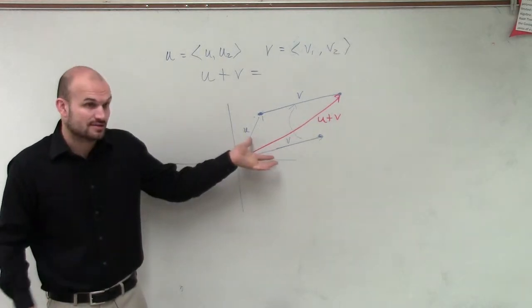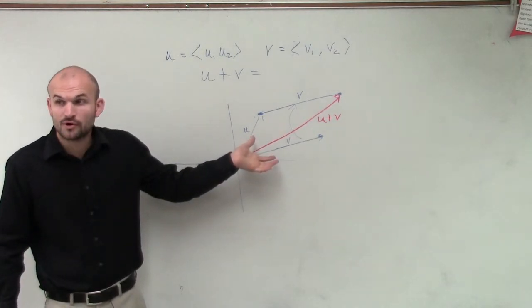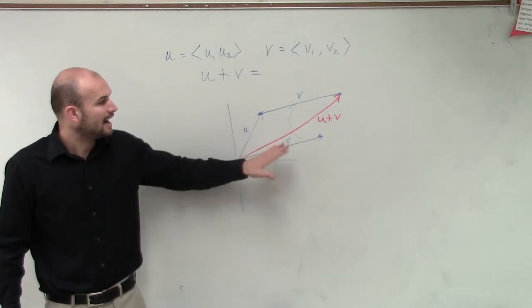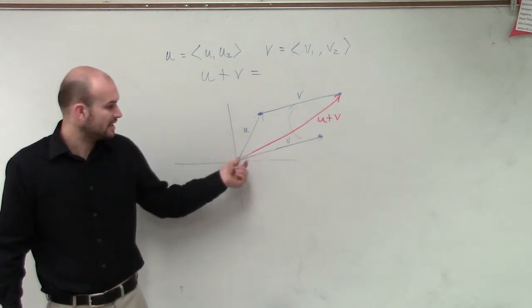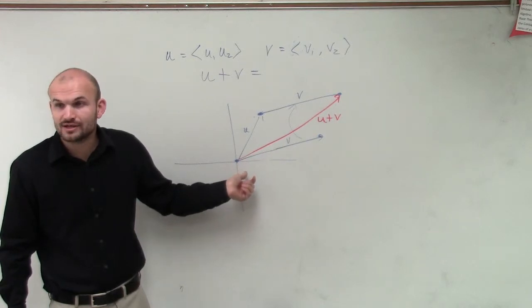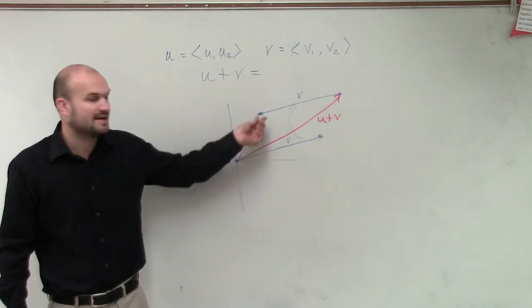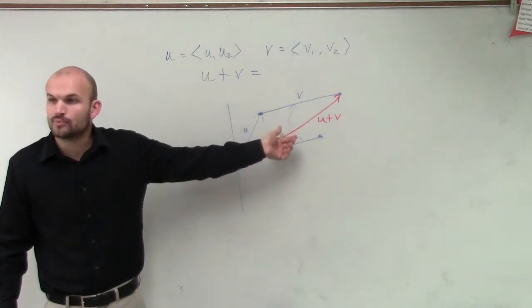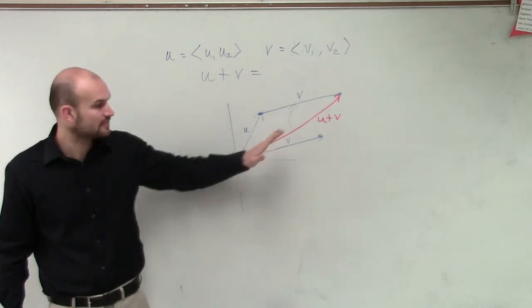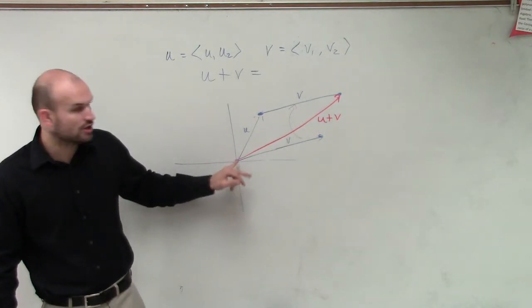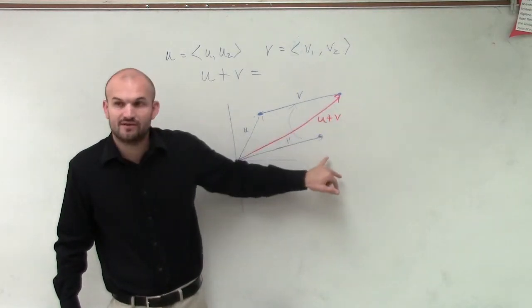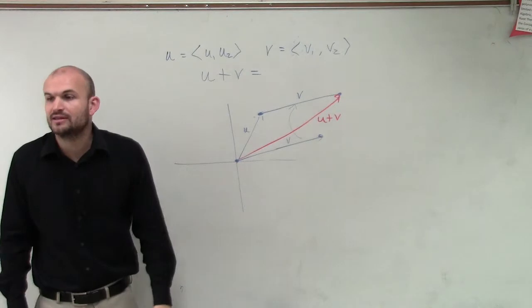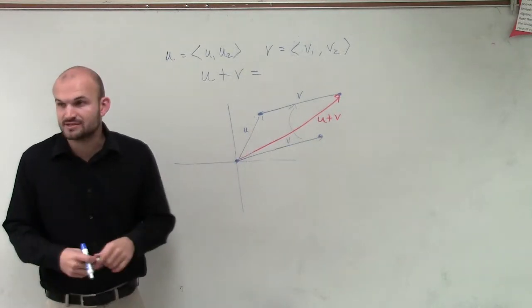So if I have two vectors in their component form, to find u plus v, I take the initial point of one vector and transpose it to the terminal point of the other vector. Then my resultant vector from our origin to the terminal point of my second vector is the vector in component form of u plus v.